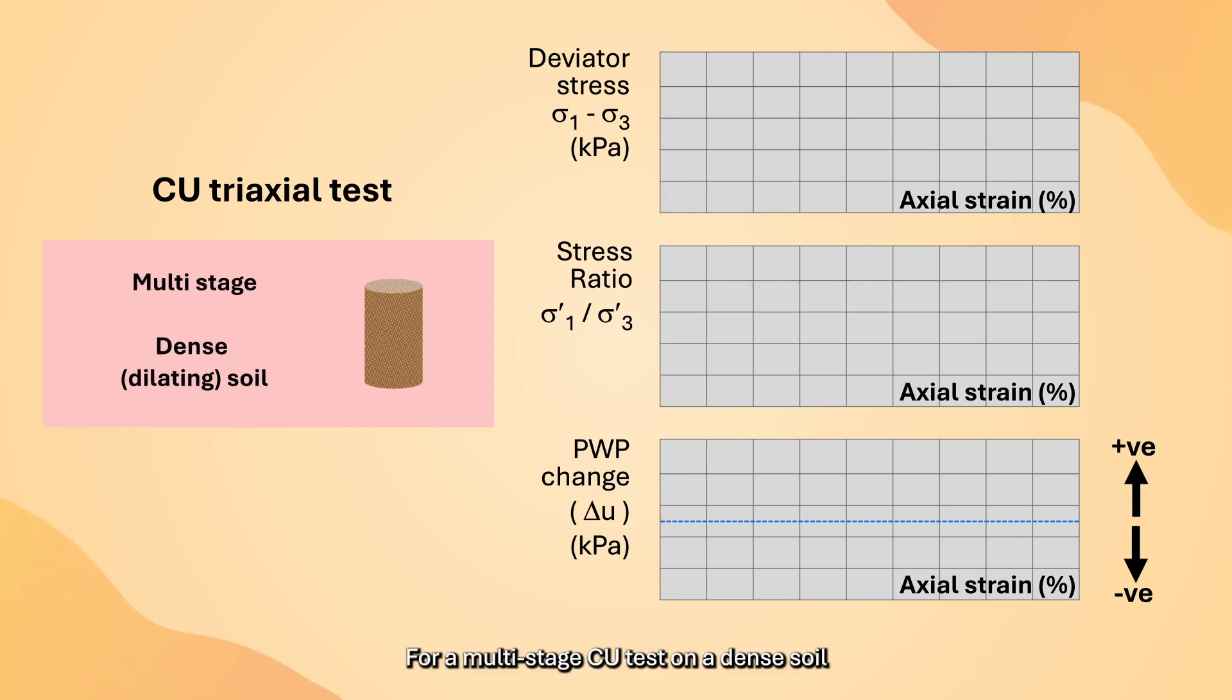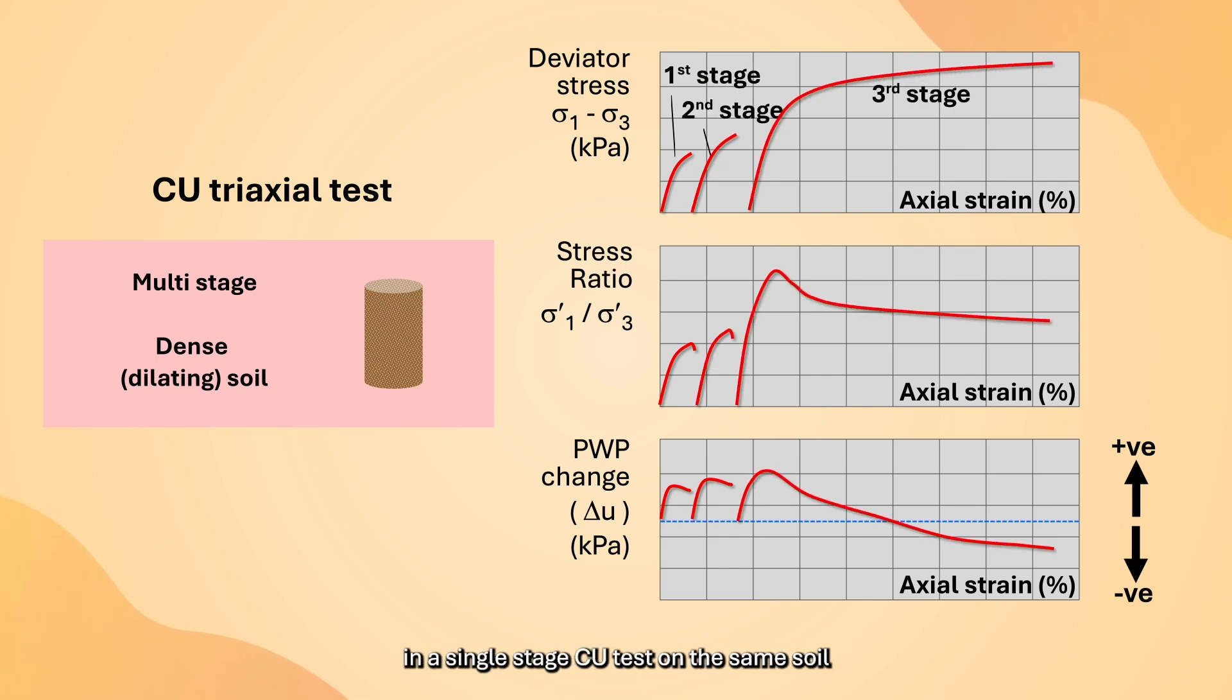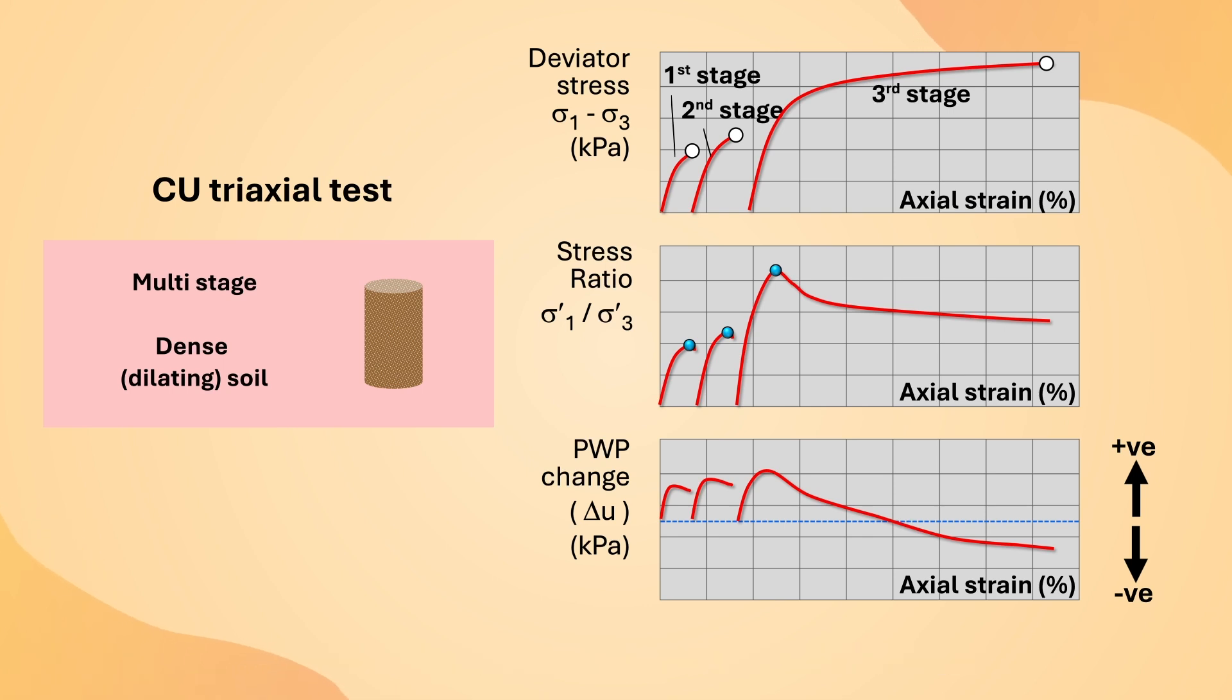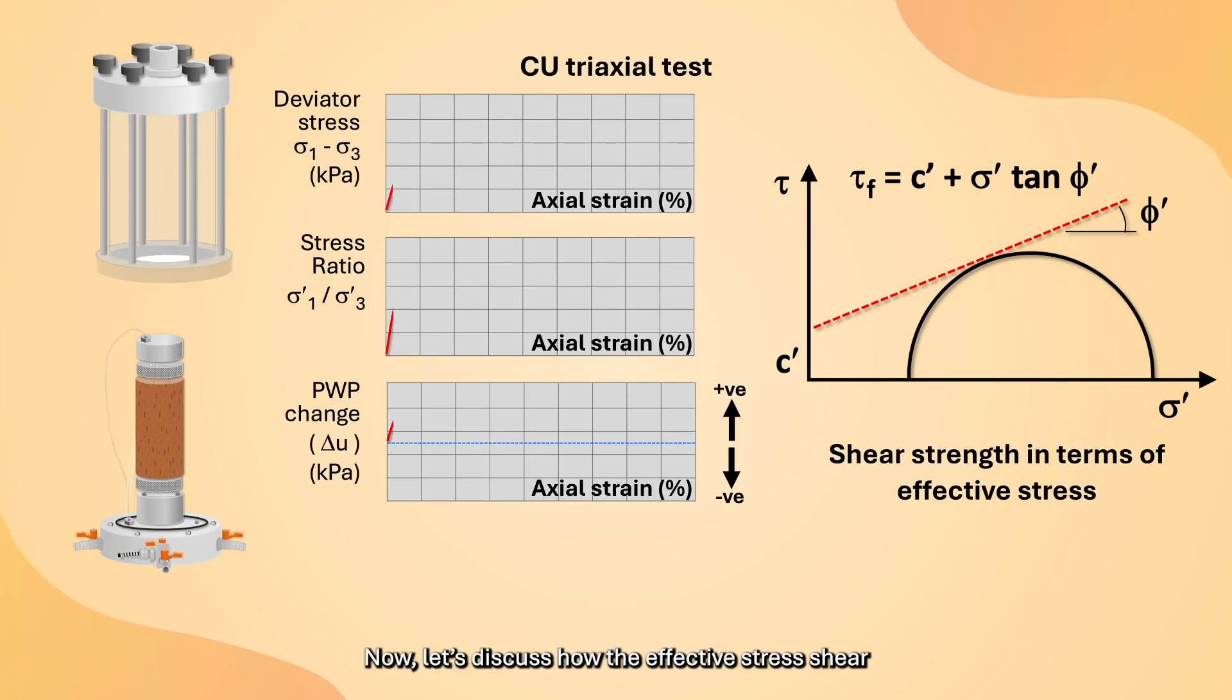For a multi-stage CU test on a dense soil, the soil's shearing behavior is similar to that in a single-stage CU test on the same soil. Local experience indicates that for most of our colluvial and saprolitic soils, the stress ratio will first reach a peak value as compared with the deviator stress in all three stages. Now, let's discuss how the effective stress shear strength parameters can be obtained from the CU test.